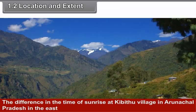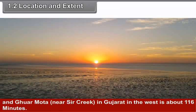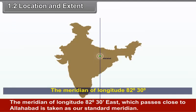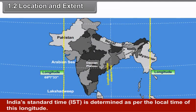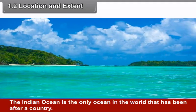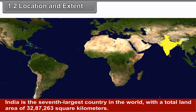Local time, sunrise, sunset, etc. are determined by longitudinal extent. The difference in the time of sunrise at Kibithu in Arunachal Pradesh in the east and Guarmota in Gujarat in the west is about 116 minutes. The meridian of longitude 82 degrees 30 minutes east, which passes close to Allahabad, is taken as the standard meridian. India's Standard Time (IST) is determined as per the local time of this longitude.